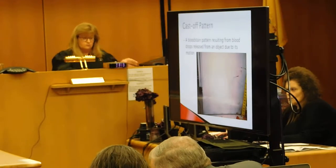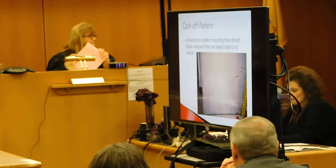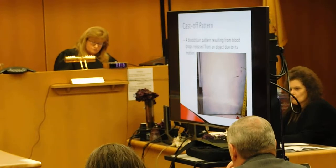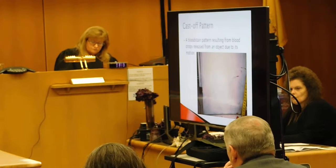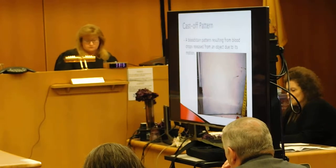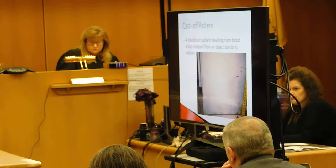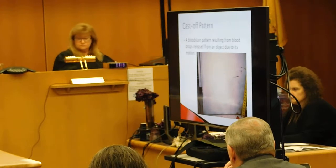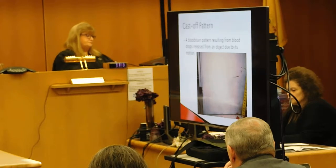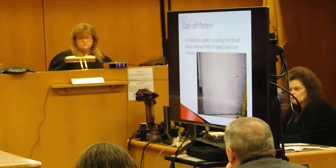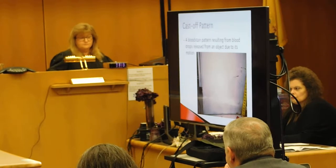Moving from slide five to slide six. A cast off pattern. Sometimes if you have a weapon at a scene, for the first impact you may not have a lot of blood on that weapon, but as the victim is struck more than once, it starts to collect blood. When it is swung, the blood will cast off in an arcing pattern. The stains are very elliptical in shape, and sometimes you can discern where the blood came from by tracing the arc back to its area of origin.